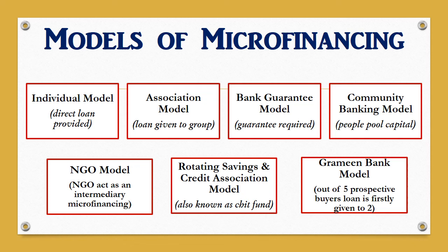There are different types of models used in microfinancing depending upon the need or amount to be financed. The first is the individual model, in which the loan is directly provided to the borrower with no need of any group or association. The second is the association model, where target people form a group or association through which various microfinancing activities are carried out and the loan is given to the group. Third is the bank guarantee model, where a guarantee — arranged through donors, a government agency, or members' savings — is required to obtain a loan.